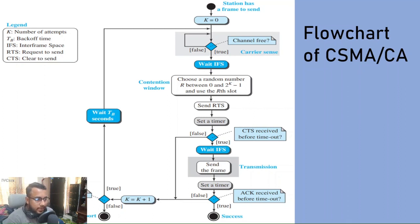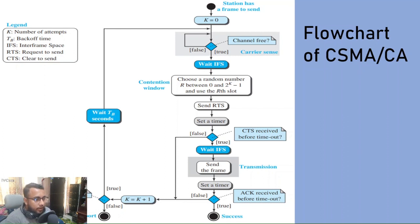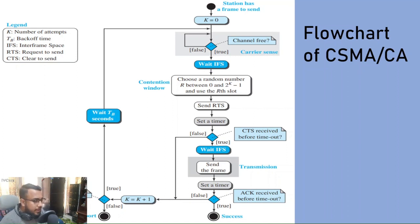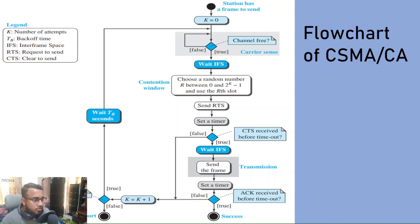First, the channel must be free. We wait for IFS — inter-frame space. Then the contention window will send RTS, which means request to send. After sending RTS, a timer is set to wait for CTS — clear to send.